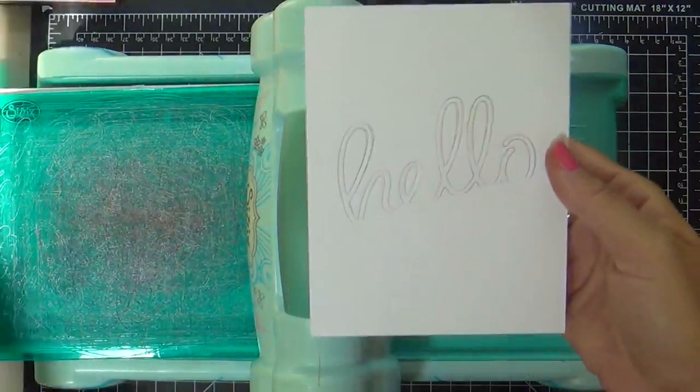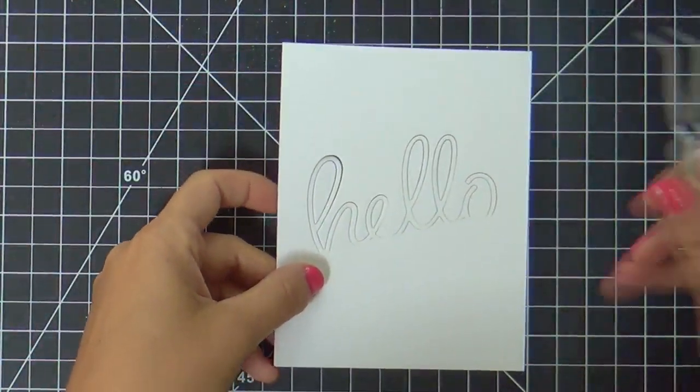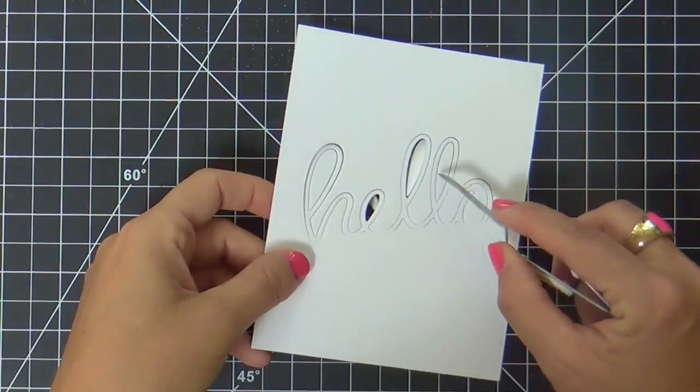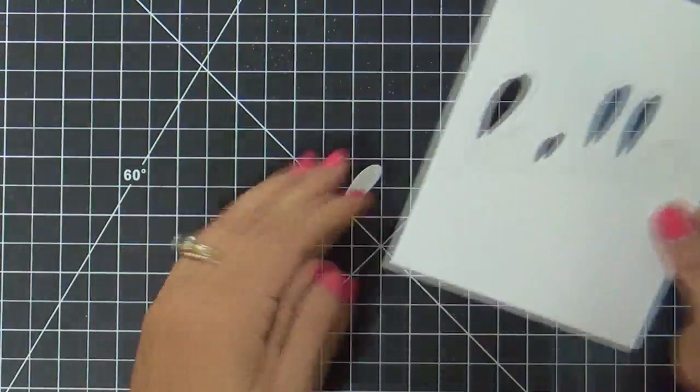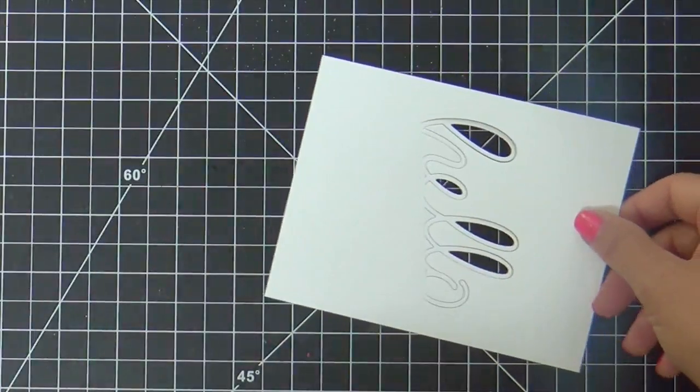And there you can see that it die cut almost all of the Hello, but a little bit of the bottom is still uncut and it will remain intact. So I'm going to pop out the innards of my H and E and double L.